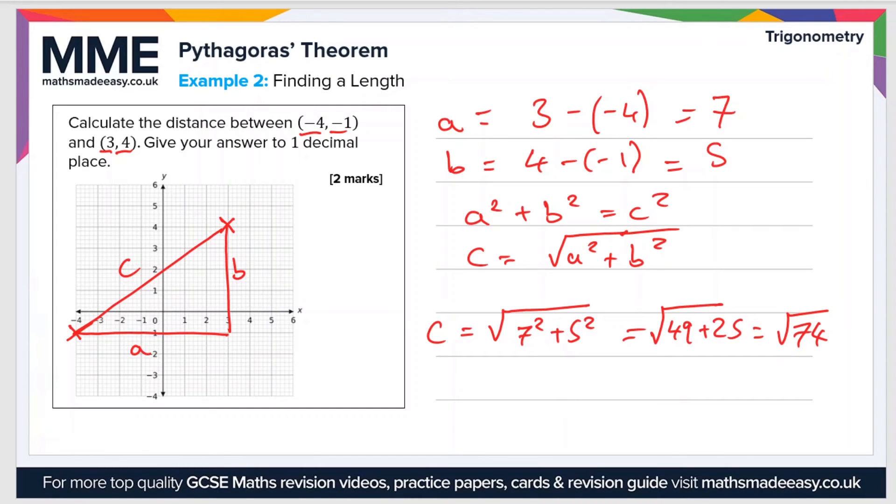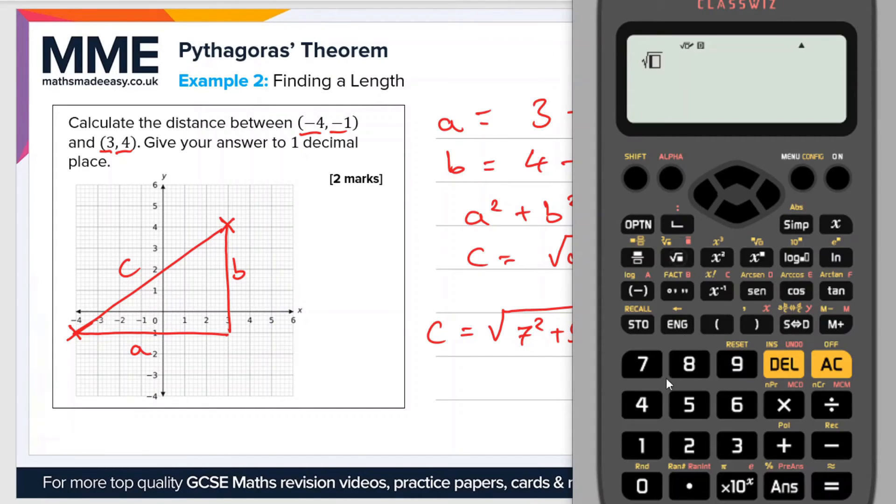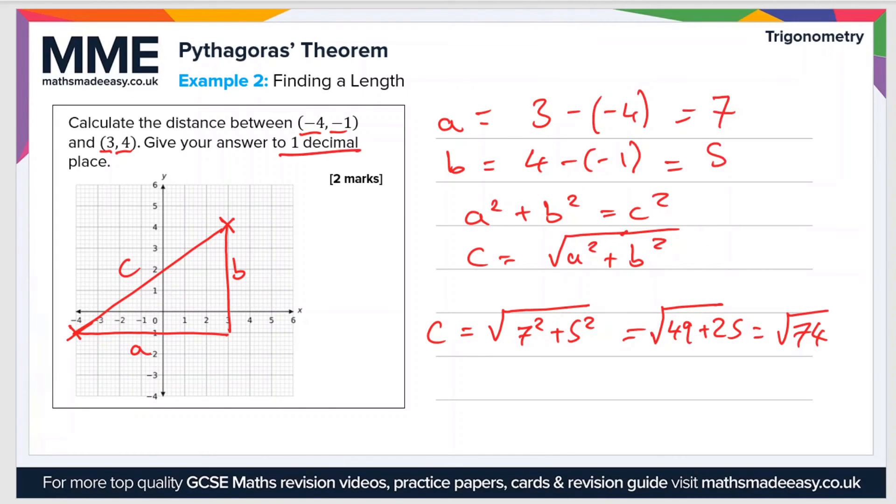If we put that into the calculator now, it's the square root of 74, and that gives us a value of 8.6023. But the question says give your answer to one decimal place. So C is therefore 8.6. That's to one decimal place.